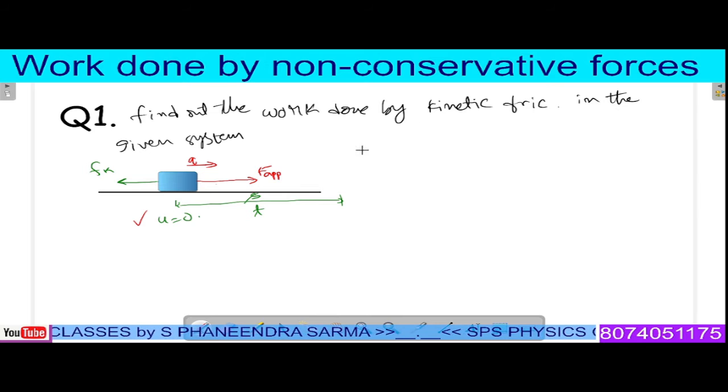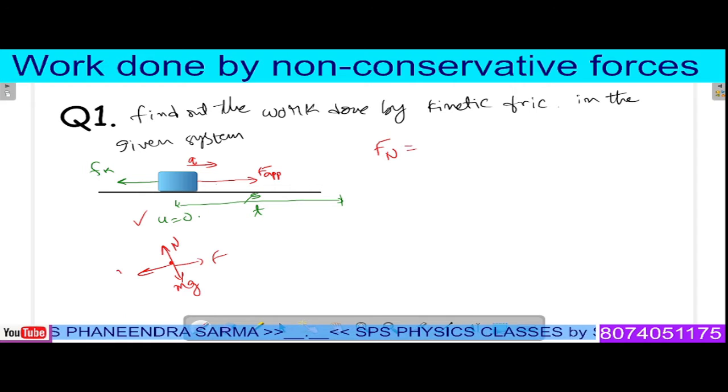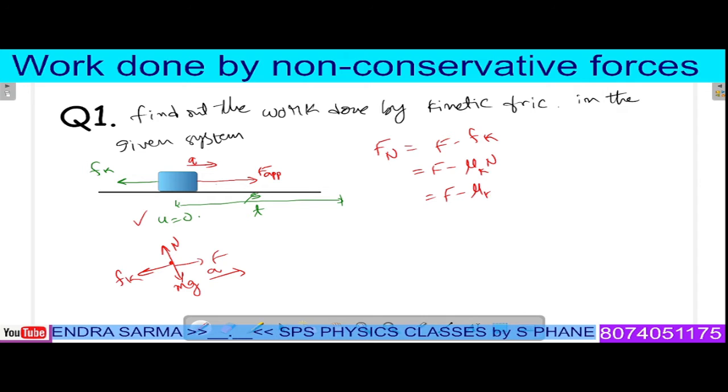In the given case, net force on the system according to Newton's second law can be obtained by preparing a free body diagram. When you prepare the free body diagram: mg vertically downward, normal reaction here, applied force f here, and frictional force fk here. Acceleration is in this direction. Therefore f minus fk equals f minus mu k times normal reaction, which is f minus mu k mg. This is the net force acting on the system.